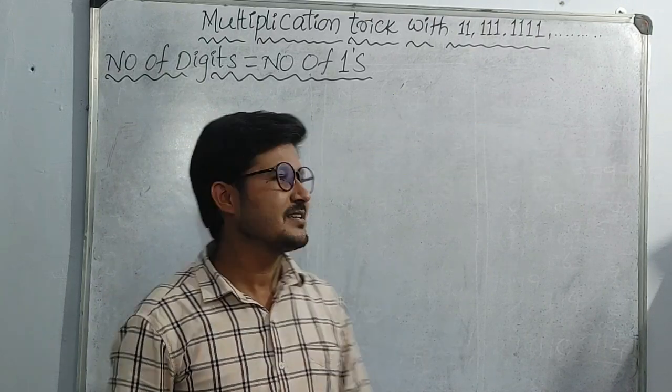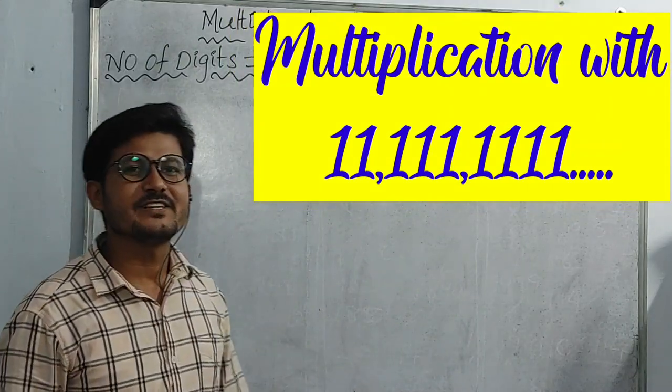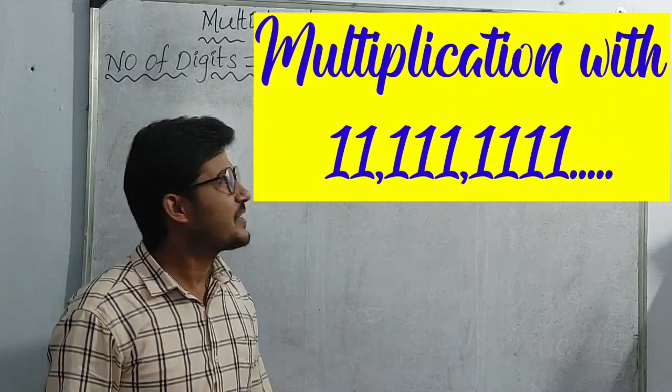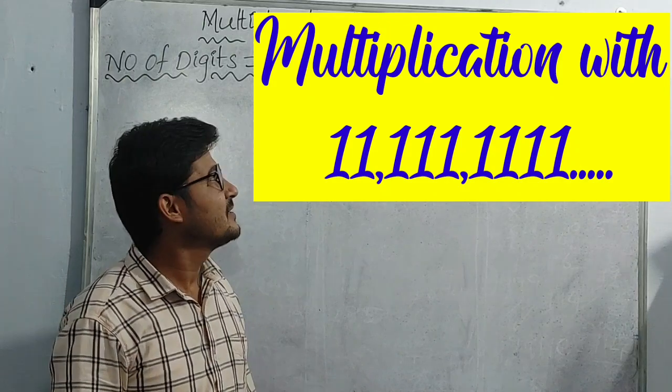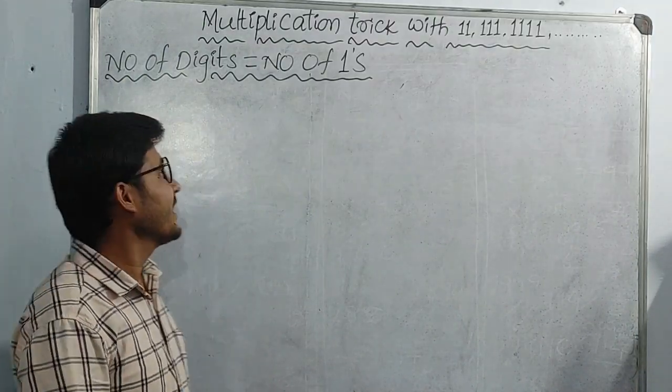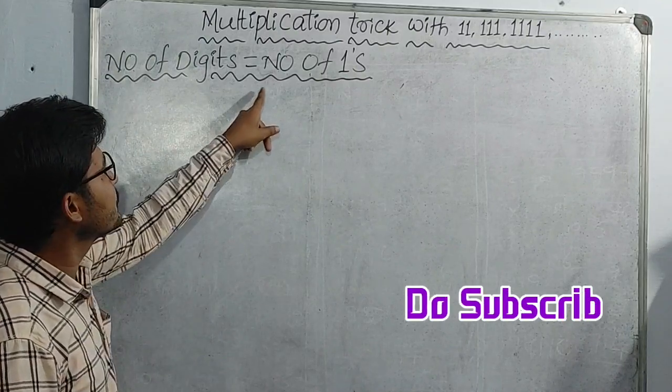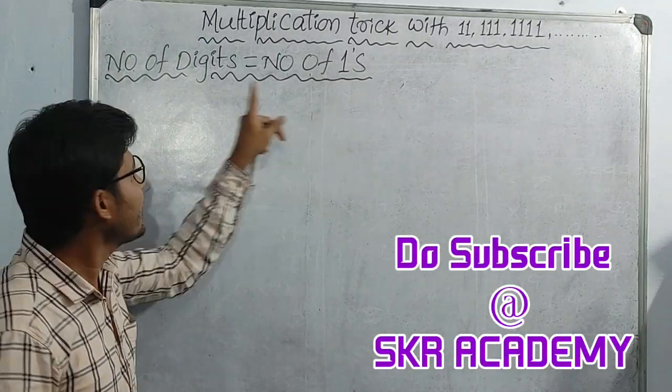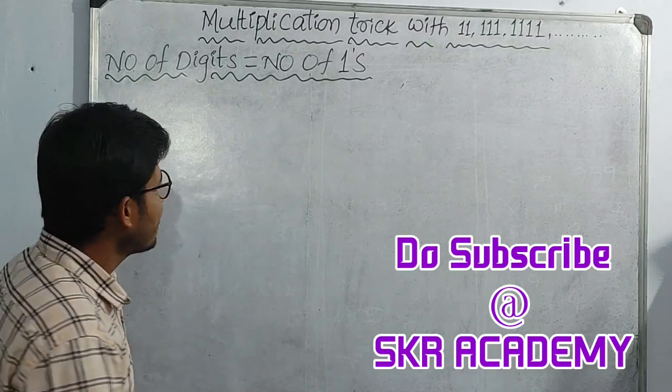Today our topic is multiplication trick with 11, 111, 1111 and so on. The key rule is: number of digits equals number of 1s.